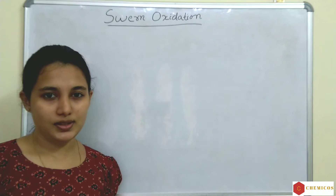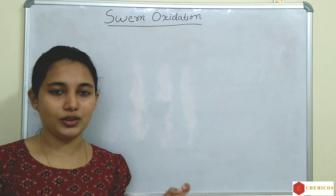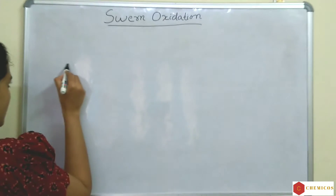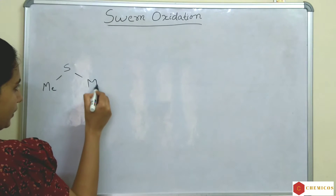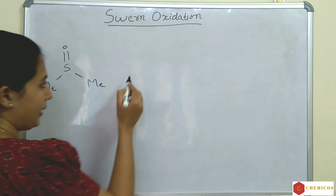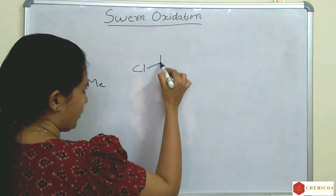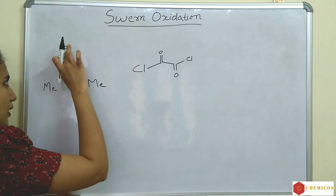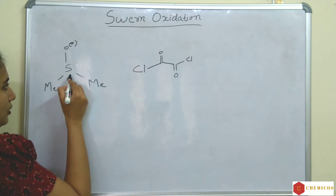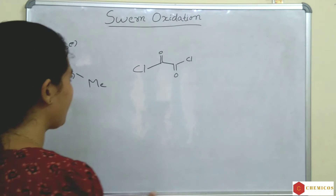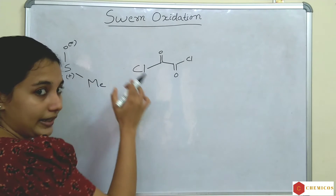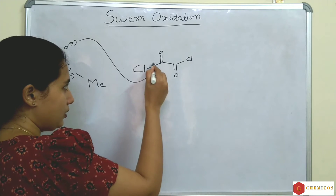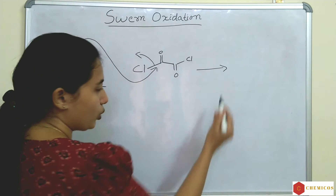Let's see the mechanism. In the first step, dimethyl sulfoxide and oxalyl chloride react. The structure of DMSO reacts with oxalyl chloride, COCl₂. The oxygen of DMSO carries a negative charge and sulfur gets a partial positive charge. This oxygen attacks the carbonyl carbon of oxalyl chloride, and chloride is eliminated because chlorine is the best leaving group.